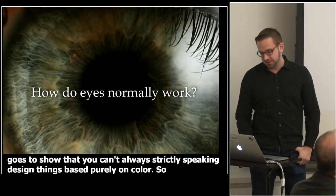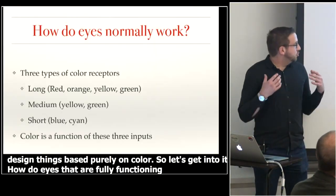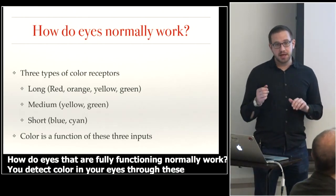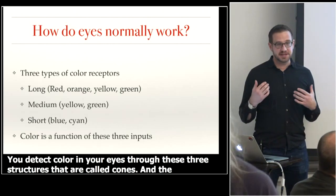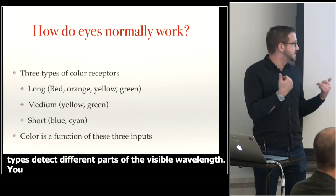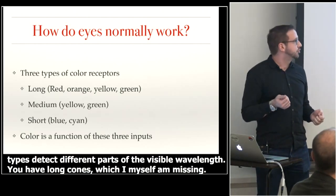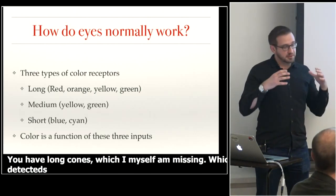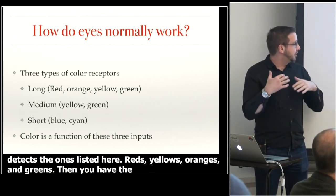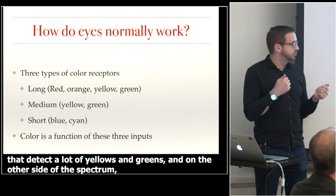How do fully functioning eyes normally work? You detect color through three structures called cones. The three different types detect different parts of the visible wavelength. You have long cones — which I myself am missing — which detect reds, oranges, yellows, and greens. Then you have medium-length cones that detect yellows and greens. And on the other side of the spectrum, you have short cones that detect blues and cyan.